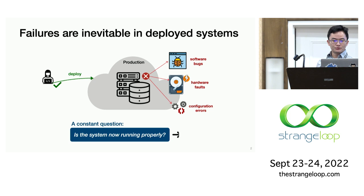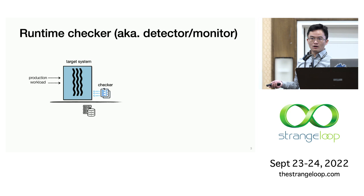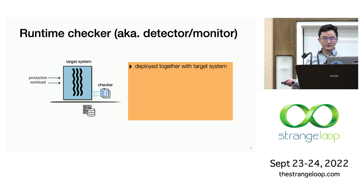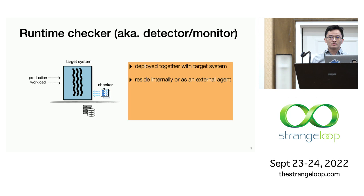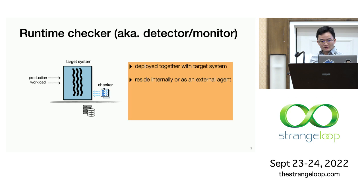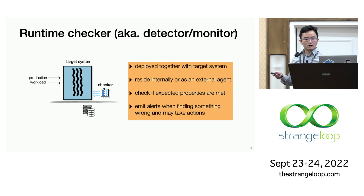To provide some background, a runtime checker — also called a detector or monitor — is deployed together with the target system. Some checkers are designed to reside within the system, while others are designed more as an external agent. In either style, it evaluates if some expected properties are met, and when the checker finds something unexpected, it emits alerts and optionally takes some actions.